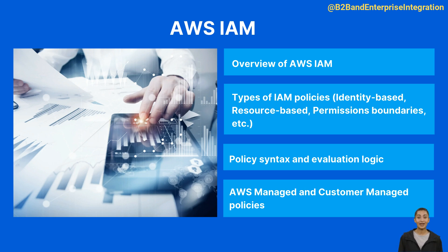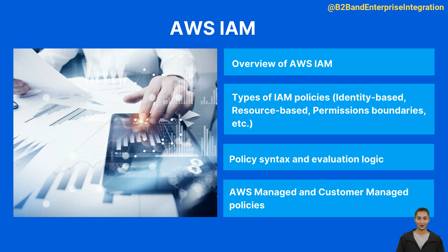4. AWS managed policies: these are pre-built by AWS and cover common use cases, like read-only access to S3. 5. Customer managed policies: users create these to meet the specific access control needs of their organization. 6. Policy simulation: the IAM policy simulator allows you to test the effects of your policies before committing them, reducing the chance of unforeseen access issues. By managing permissions through IAM policies, you can adhere to the principle of least privilege, giving users and resources the minimum access necessary to perform their jobs, thereby enhancing your AWS environment's security.